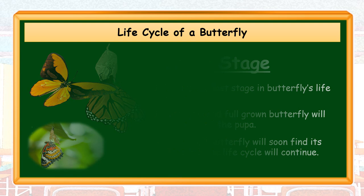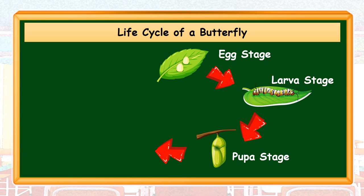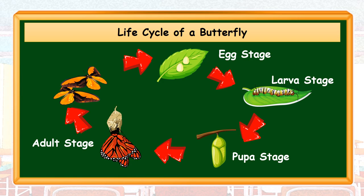Let's have a recap of the life cycle of a butterfly: Egg Stage, Larva Stage, Pupa Stage, Adult Stage. And the butterfly life cycle will continue.